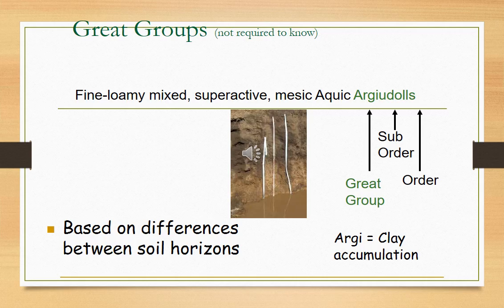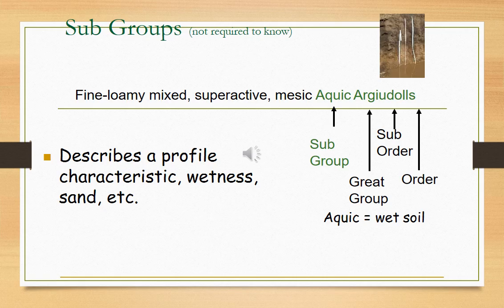Great groups are subdivisions of suborders. They have been established largely on the basis of differentiating soil horizons and soil features — diagnostic horizons. Soils in a given great group have the same kind and arrangement of these horizons. More than 240 great groups have been identified.